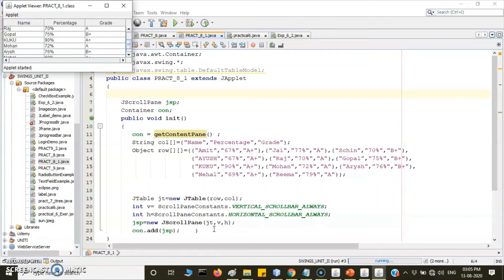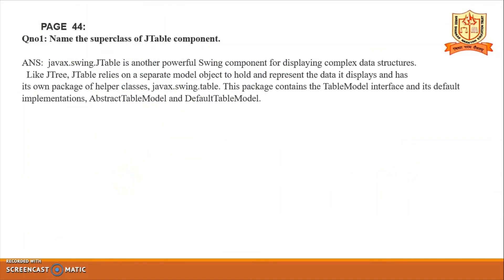These are the two examples in practical number 8. Now the review questions: name the superclass of JTable component — it is javax.swing.JTable, which is contained in the javax.swing package. javax is the extension of Java. javax.swing.JTable is a powerful Swing component for displaying complex data structures. Like JTree, JTable relies on a separate model object. The javax.swing.table package contains the TableModel interface, with default implementations AbstractTableModel and DefaultTableModel.